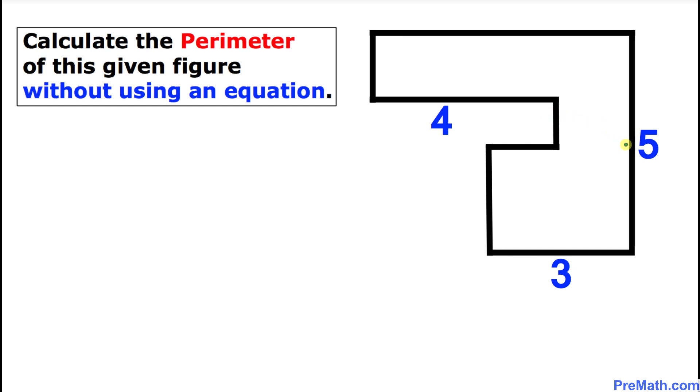We can see that this side is 5 units, this side, this slab is 3 units while this slab is 4 units. And one more thing, we are assuming that all these angles are 90 degrees. That means these slabs are perpendicular to each other.